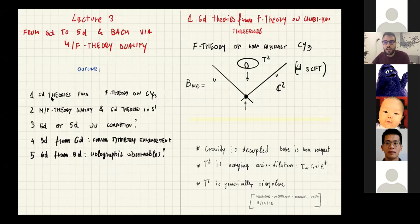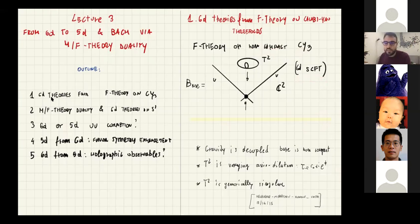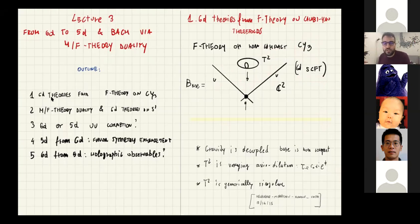So let me start by briefly reviewing the F-theory construction. F-theory on a Calabi-Yau threefold — especially a non-compact Calabi-Yau threefold — can engineer six-dimensional superconformal theories. The structure of these threefolds is given by a two-dimensional base parameterized by coordinates u and v, with an elliptic fiber over this two-dimensional base. This defines the Calabi-Yau threefold where we put the 12-dimensional theory which is F-theory.